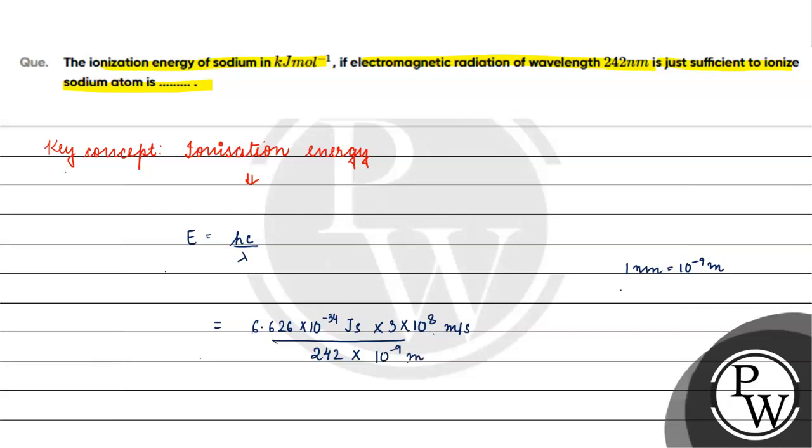Second se per second cut kya, meter se ye meter cut kya. Kya jayega hamare paas? 6.626 × 10⁻³⁴ plus 8, ye minus 9 jo hai numerator mein chala jayega, so plus 9 ban jayega, by 242.